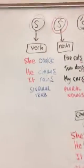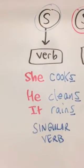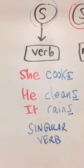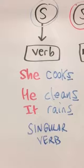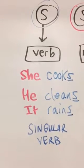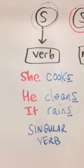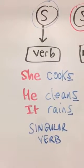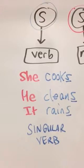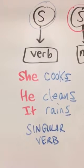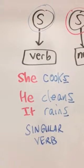First, let's talk about the S on the verb. Sometimes we need to put S on the verb for a singular verb with she, he, or it. It rains, he cleans, she cooks. That's simple present tense. The S is on the verb because she, he, and it are singular.